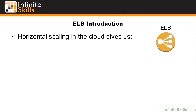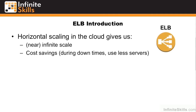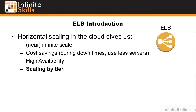Horizontal scaling in the cloud gives us near infinite scale. We can keep adding more and more instances behind that load balancer. It also gives us cost savings — during downtimes we can use fewer servers — and it allows for high availability and scaling by tier.